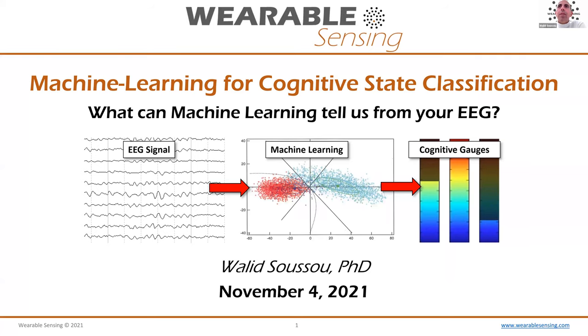Good morning, good evening, good afternoon, wherever you may be around the world. Thank you very much for joining us for our eighth installment of our webinar series. This particular one is titled Machine Learning for Cognitive State Classification, and what we're going to be trying to answer today is: what can machine learning tell us about you from your EEG?